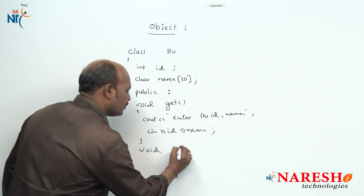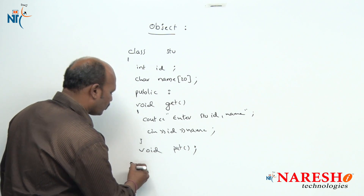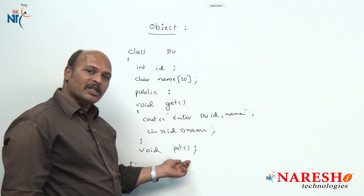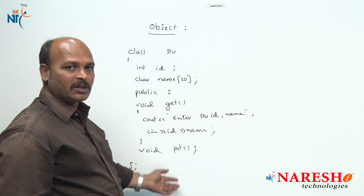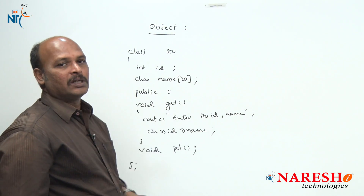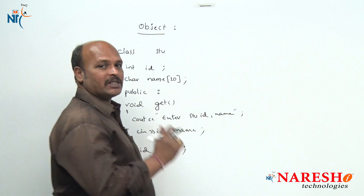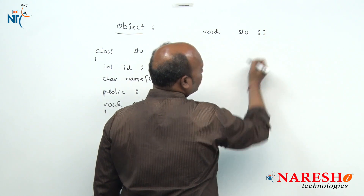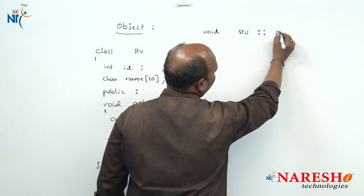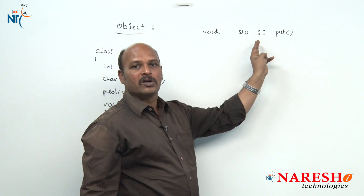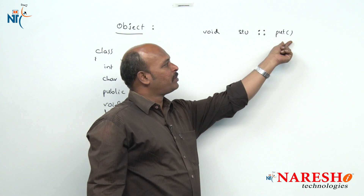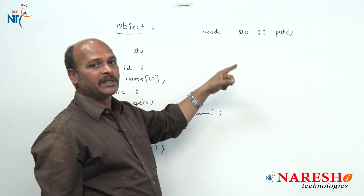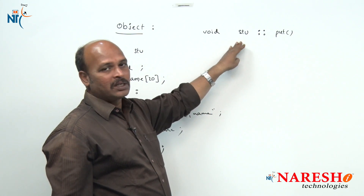When defining outside the class, the syntax is: return type, then class name, scope operator (::), then the member function name — for example, void Student::put. Here Student is the class name and :: is the scope operator. The scope operator represents that the function on its right side belongs to the class on its left side.